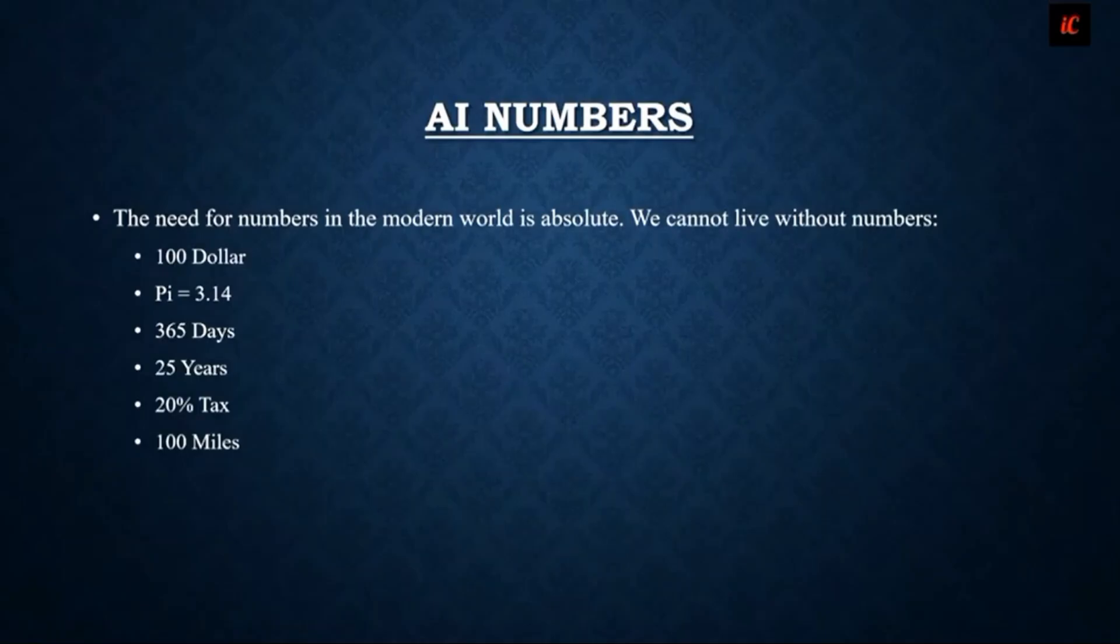For example, these are the basic terms we cannot live without: 20 percent tax, these kinds of percentages, years, numbers, days, pi, dollar. These are the kinds of numbers that are very important in case of AI.